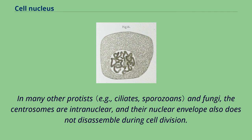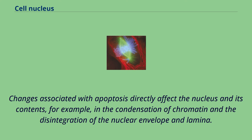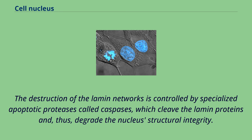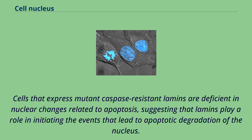Apoptosis is a controlled process in which the cell's structural components are destroyed, resulting in death of the cell. Changes associated with apoptosis directly affect the nucleus and its contents — for example, in the condensation of chromatin and the disintegration of the nuclear envelope and lamina. The destruction of the lamin networks is controlled by specialized apoptotic proteases called caspases, which cleave the lamin proteins and thus degrade the nucleus's structural integrity. Cells that express mutant caspase-resistant lamins are deficient in nuclear changes related to apoptosis, suggesting that lamins play a role in initiating events that lead to apoptotic degradation of the nucleus. Inhibition of lamin assembly itself is an inducer of apoptosis.